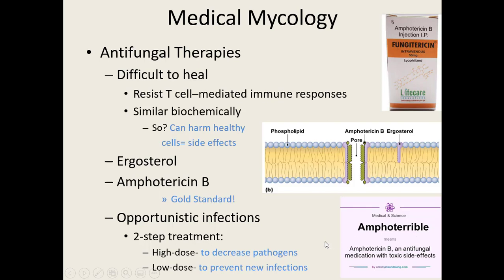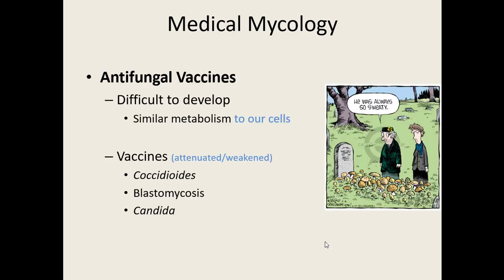It would be nice to have vaccines for all these fungi, but they're difficult to develop because fungal cells are similar to our own eukaryotic cells. We do have some vaccines — weakened versions of certain fungi so they can't cause disease — including vaccines against some Coccidioides, Blastomyces, and Candida species. More are being developed, but they're harder to create than bacterial or viral vaccines.